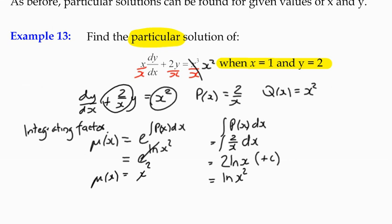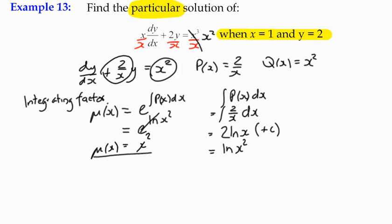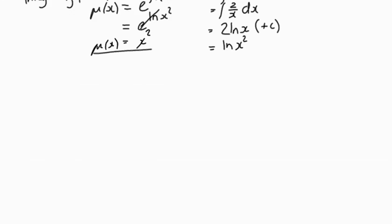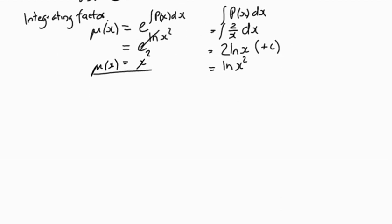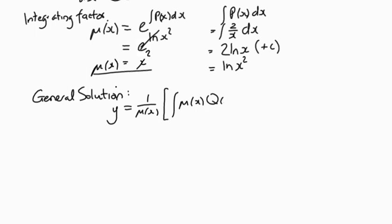Good. That's our first step along the way. Second step is to actually come up with the equation for the function. So we can say that the general solution y is equal to 1/μ(x) multiplied by the integral of μ(x)q(x). Remember it all rhymes.